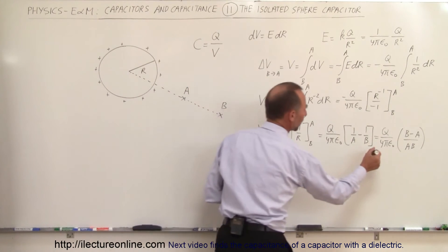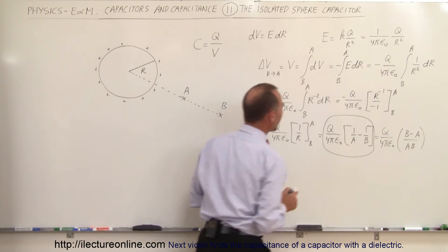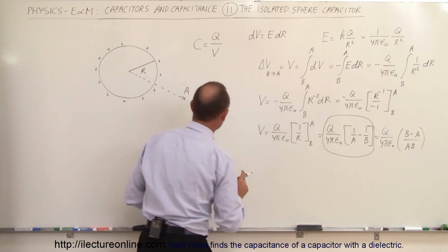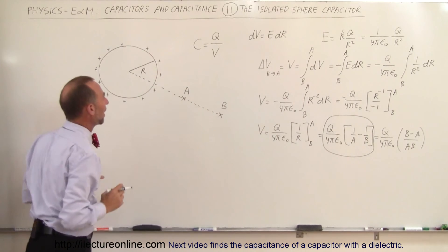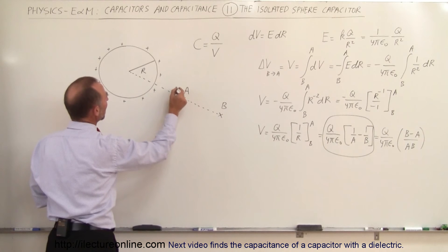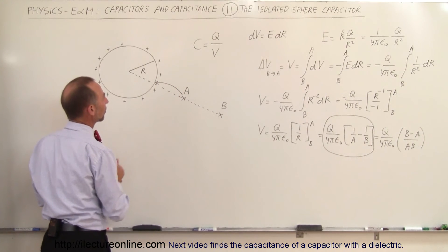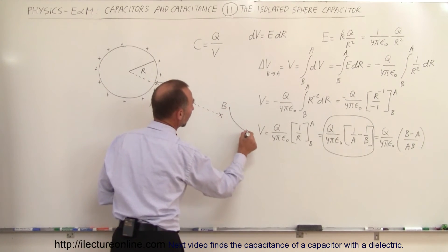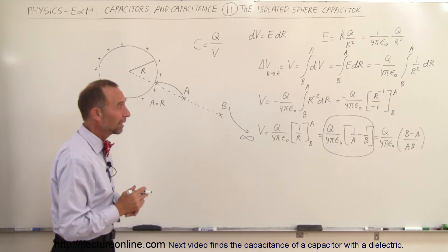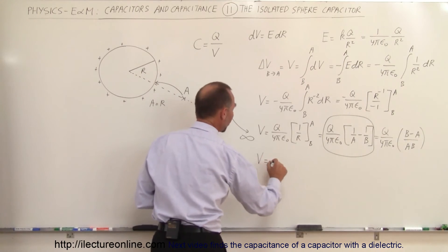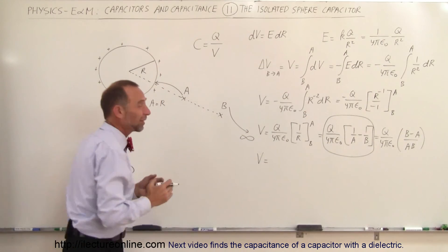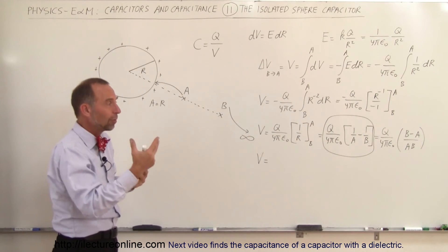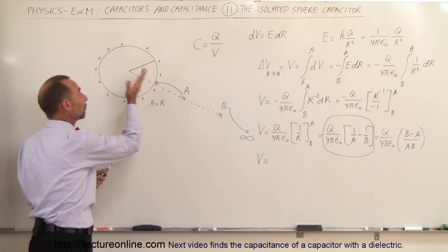Now let's consider the physical isolated sphere capacitor. What happens if we move A to the surface of the capacitor, so A equals the radius R, and move B out to infinity where the potential equals zero? Then our potential difference is defined going from infinity to the surface of the sphere — from a point where the potential is zero to the surface of the capacitor.